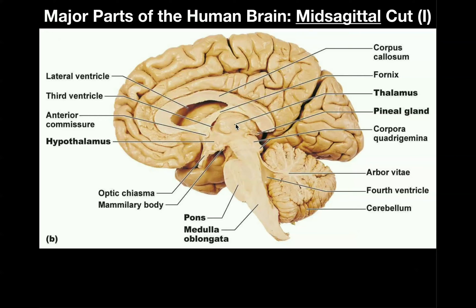If we go anterior and a little bit down from the thalamus, this region right here is the hypothalamus. Now we won't be able to see it in this picture, but normally dangling directly underneath the hypothalamus we would have the pituitary gland. When looking at a real cadaver brain, the pituitary gland often falls off during preparation, so you won't ordinarily see it here, but it would normally lie right underneath the hypothalamus. Directly posterior to the pituitary gland is this little bump called the mammillary body.